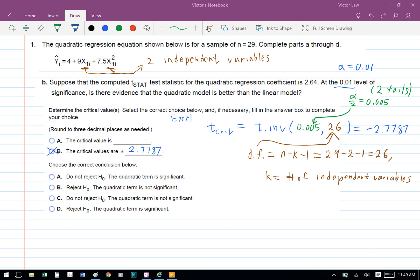Next, to find the critical value we're going to use Excel to help us solve that. We're going to use the formula equal T.INV bracket, and then we're going to type in the alpha over 2, which is 0.005, comma 26, which is the degree of freedom, and we're going to get negative 2.7787.